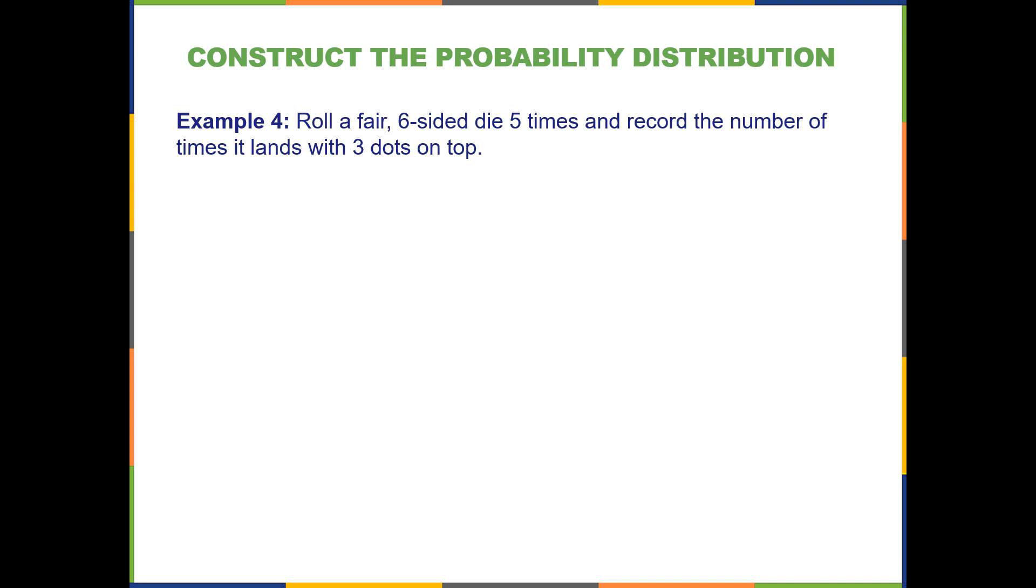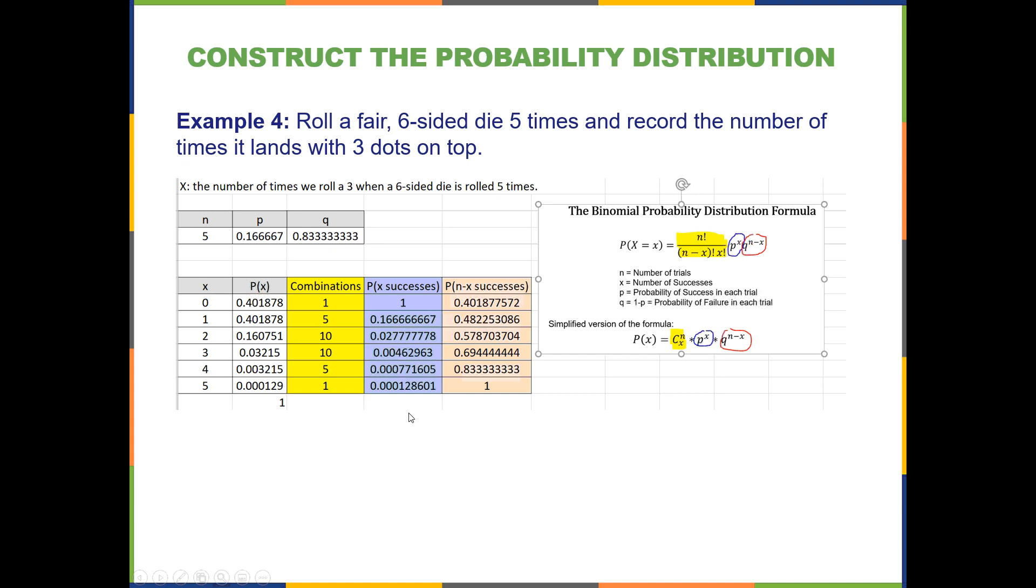And now we want to construct the probability distribution. All right, now this is what it will look like when we finish. And what you see here is I have my number of trials, my probability of success as a decimal, one out of six. And then one minus P gives me Q, the probability of failure in each trial.